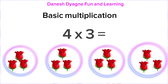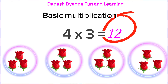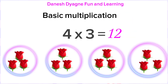Now kids, how many objects altogether? Can you tell me? Great job! There are 12 objects altogether. So four times three equals 12. Or four multiplied by three equals 12.